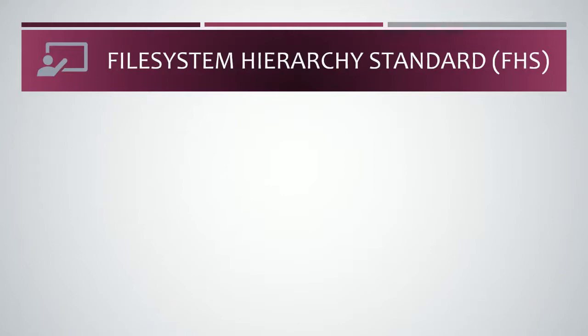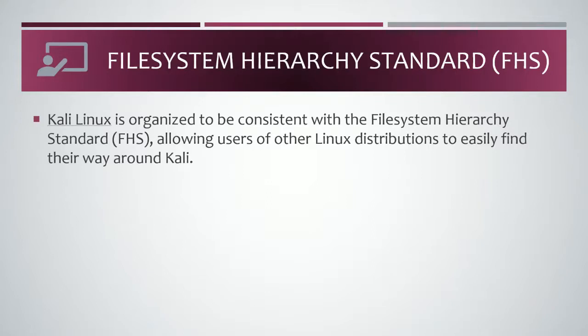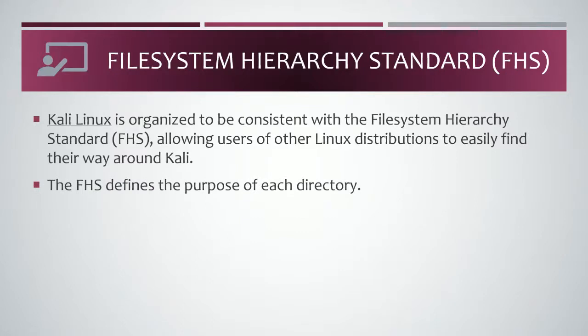First one is File System Hierarchy Standard or FHS. Kali Linux is organized to be consistent with the File System Hierarchy Standard or FHS, allowing users of other Linux distributions to easily find their way around Kali. The FHS defines the purpose of each directory and the directory structure and directory contents in Linux distributions. It's pretty much the Linux standard for its directory structures. They always use FHS — it's the generic one.